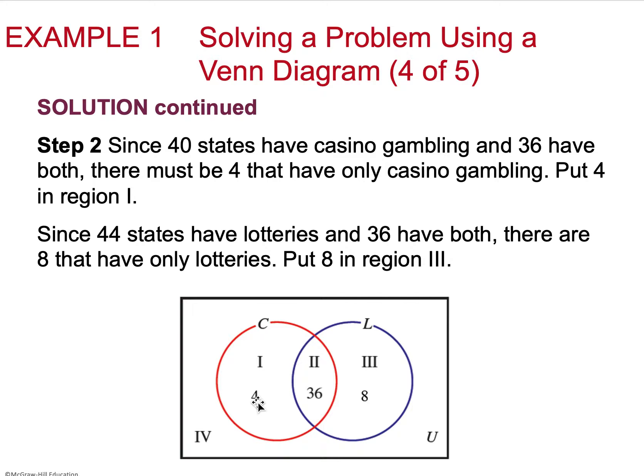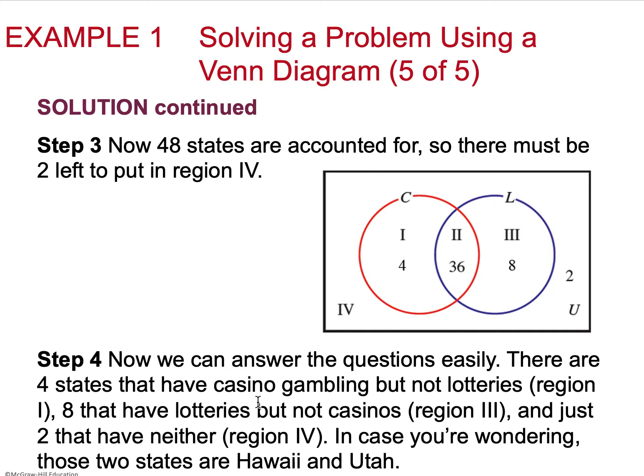What I have to do is 44 states have lotteries, and 36 have both, so that leaves only 8 that have only lotteries. So I'm going to put an 8 into that region 3. And I'm getting that 8 from doing 44 minus 36. That's where that 8 is coming from, in case you're wondering.